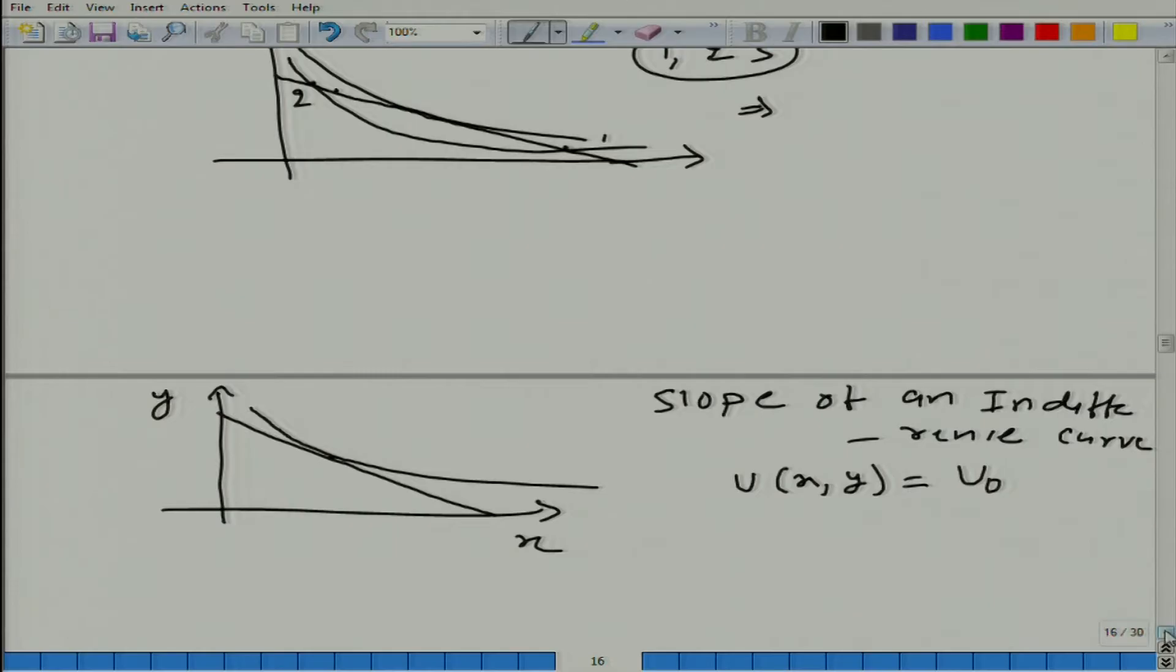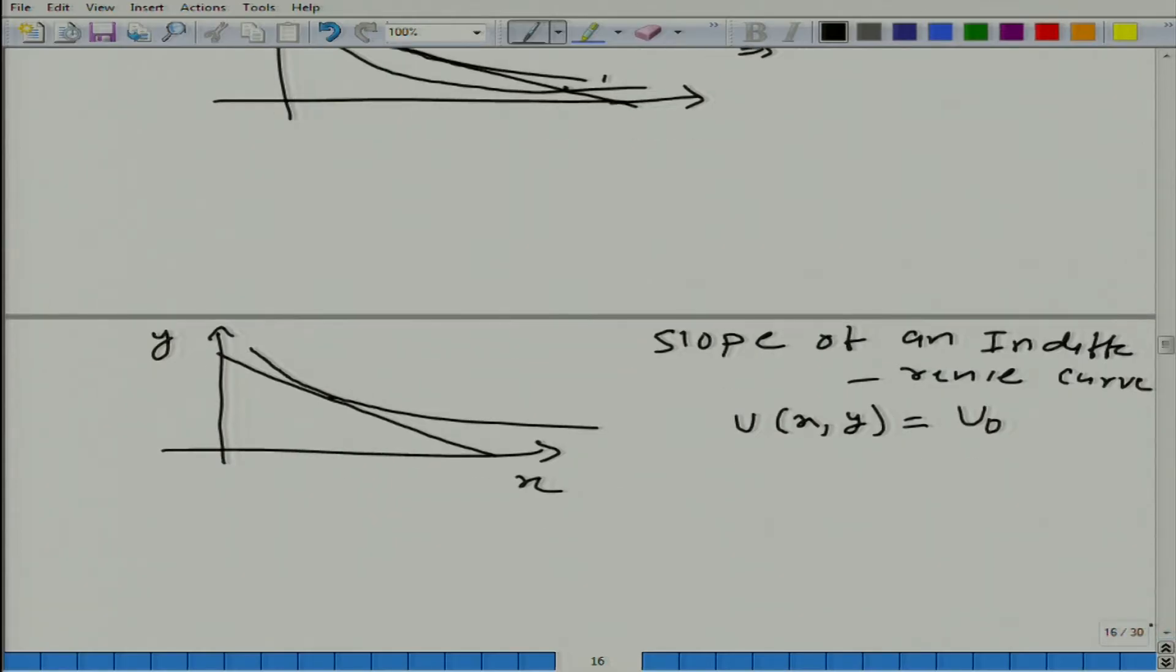And we will differentiate it totally. Total differentiation, what we will get equal to 0. Why? Because this is a fixed number. If we differentiate it with respect to any variable, what do we get? 0.